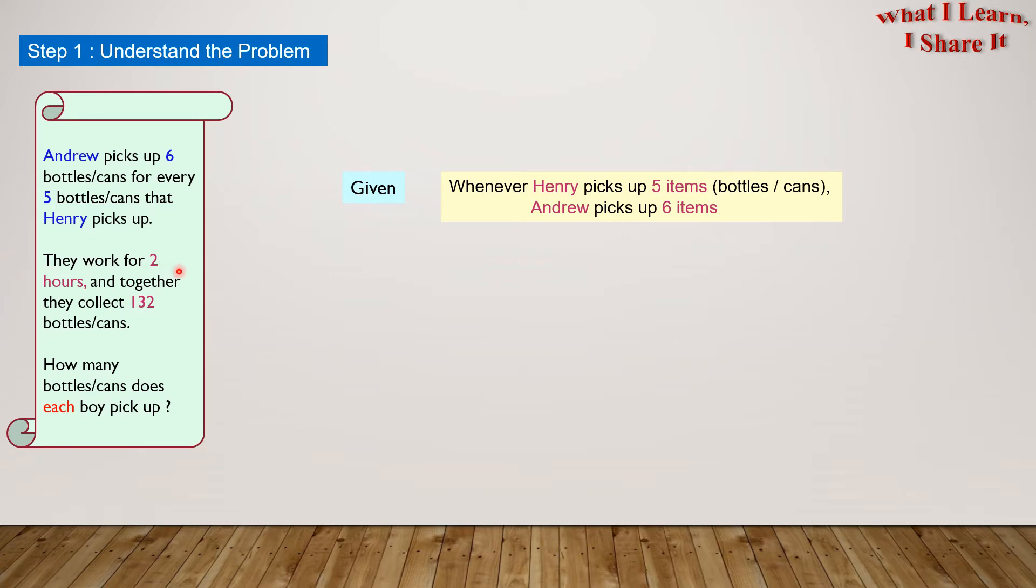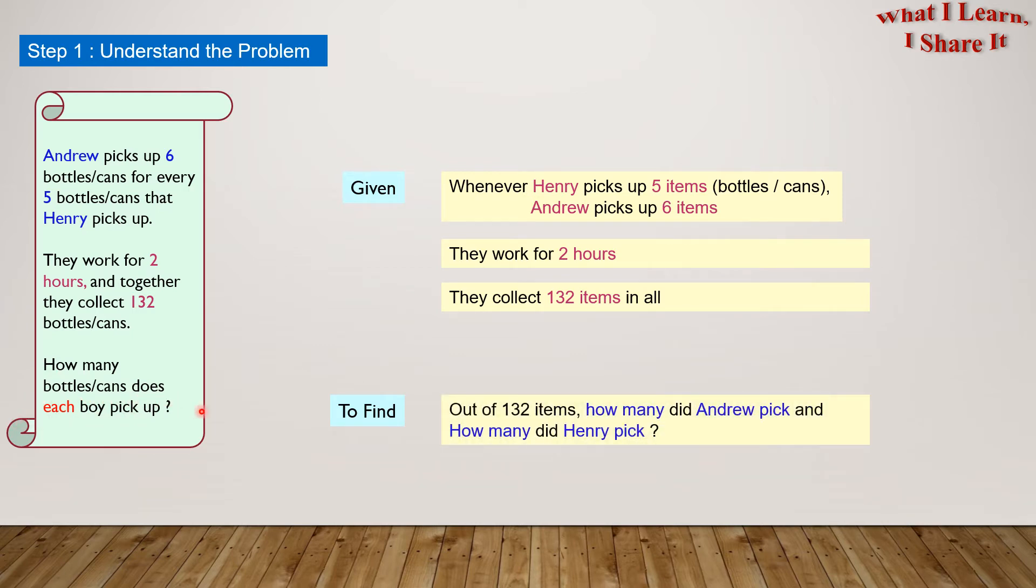They work for 2 hours and together they collect 132 bottles and cans. So, in our own words, we can write they work for 2 hours and they collect 132 items in all. What do we have to find? We have to find how many bottles and cans does each boy pick up. In our own words, we can write: out of 132 items, how many did Andrew pick and how many did Henry pick?